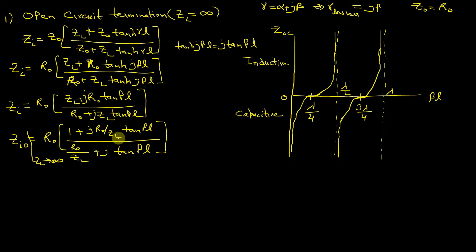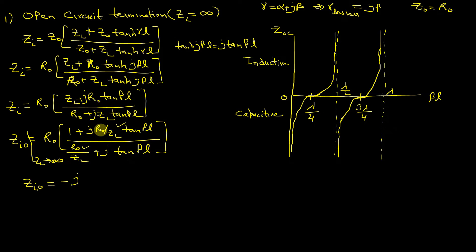As ZL approaches infinity, the terms with R₀/ZL go to zero, so ZIO simplifies to -jR₀ / tan(βL), which equals -jR₀·cot(βL). So this is the value of the open circuit input impedance.